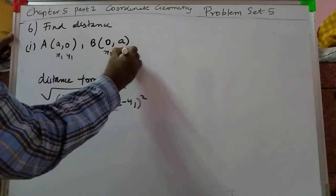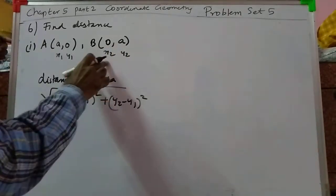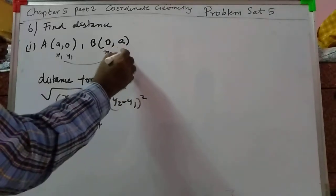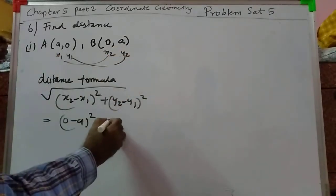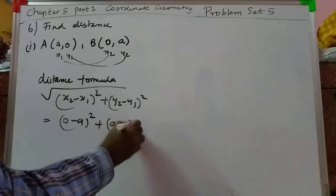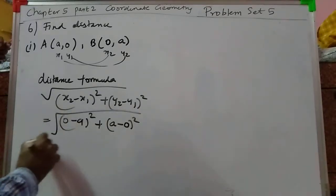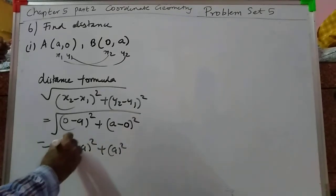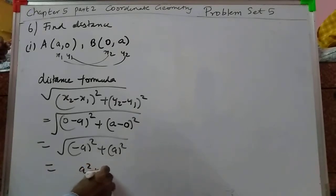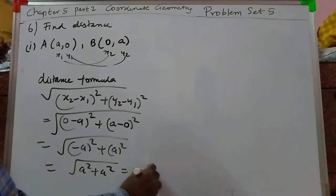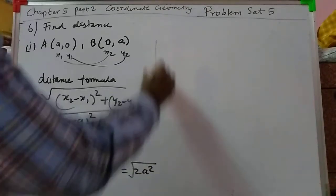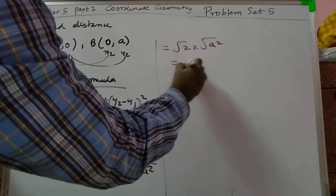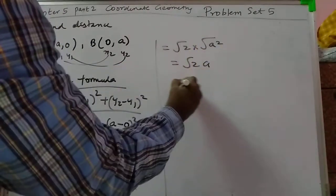Take the first point as (x1, y1) and the second as (x2, y2). So x2 minus x1 becomes 0 minus a, the whole square. That becomes a minus 0 the whole square, which is minus a the whole square. Plus a the whole square gives a square plus a square, which equals 2a square.